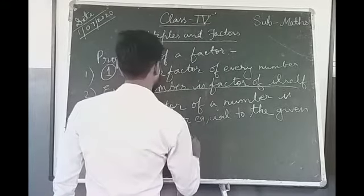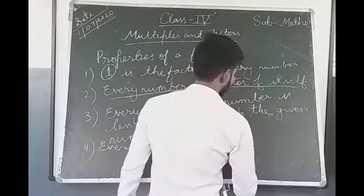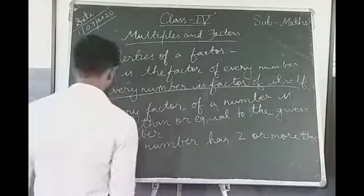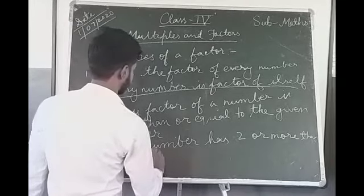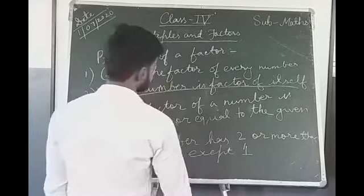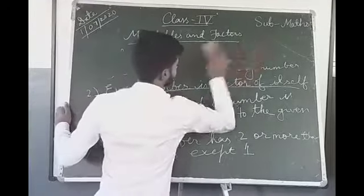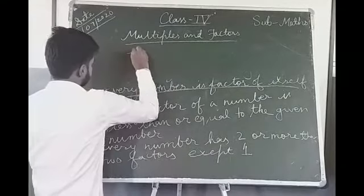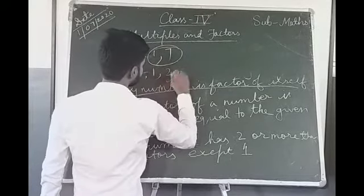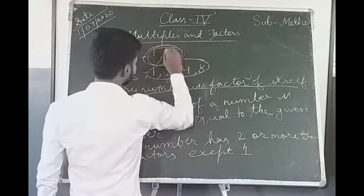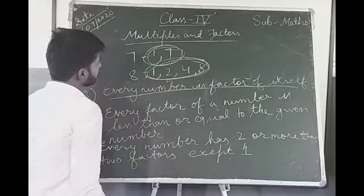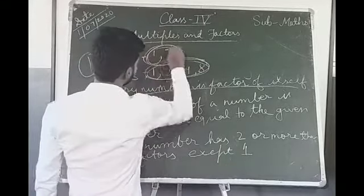Property 4: Every number has two or more factors, except 1. For example, the factors of 7 are 1 and 7, so it has 2 factors. The factors of 8 are 1, 2, 4 and 8, so it has more than 2 factors. Only 1 has just itself as its factor. Every other number has 2 or more factors.